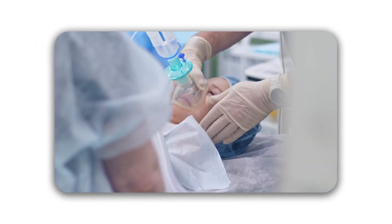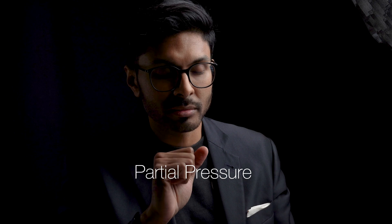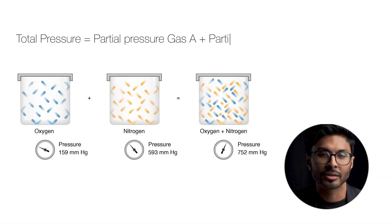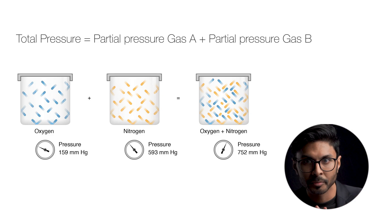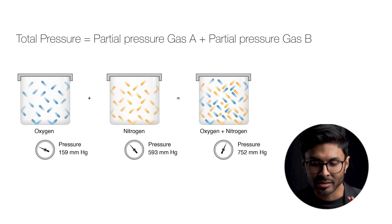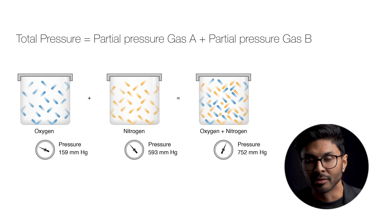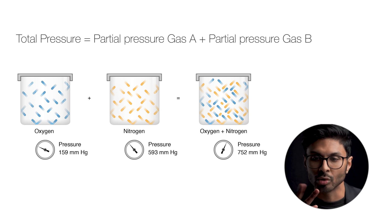The Ideal Gas Law allows anesthesiologists to calculate the delivery of gases like nitrous oxide based on temperature, pressure, and volume. In medicine, we rarely have gases on their own — there's usually a mix, like oxygen and carbon dioxide together, or the air around us which is always a mixture. This is why we look at partial pressures. In a mixture of gases, each gas exerts its own partial pressure proportional to its concentration, and the total pressure of the mixture is the sum of all the individual partial pressures.